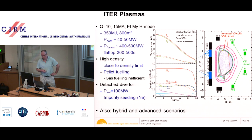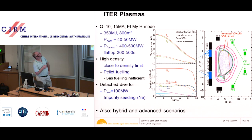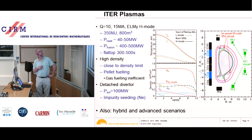What are ITER plasmas like? This is the typical plasma we expect to operate in steady state for 300 to 500 seconds, predicted to produce an amplification factor of 10. The current will be 15 mega-amperes. It will operate in what is called H-mode. Looking at the expected temperature profile as a function of radius, in the center we have about 30 kilo-electron-volts — hundreds of millions of degrees.